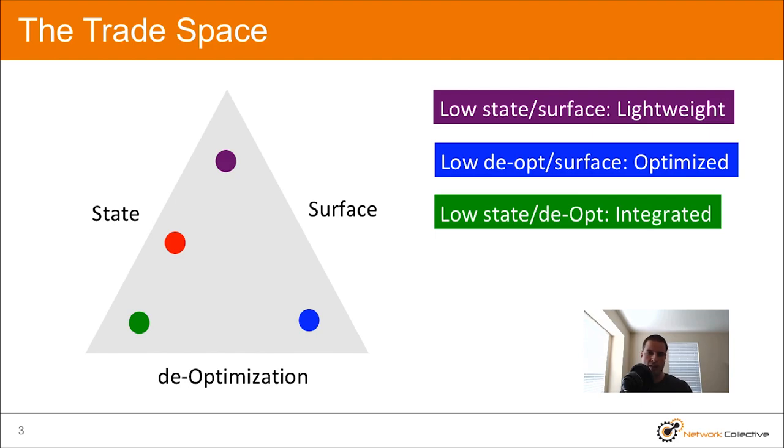We can also draw dots anywhere else in the triangle that we want to. So I'm going to draw a couple more dots and explain what these mean. Suppose we have a design or technology that is only low state and kind of has a medium amount of the other two. So it's not really optimized and it's not super, it's not really bad in either direction. It's kind of middle of the road for the other two.